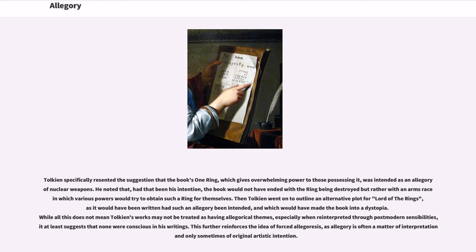Tolkien specifically resented the suggestion that the book's One Ring, which gives overwhelming power to those possessing it, was intended as an allegory of nuclear weapons. He noted that, had that been his intention, the book would not have ended with the ring being destroyed, but rather with an arms race in which various powers would try to obtain such a ring for themselves. Tolkien went on to outline an alternative plot for The Lord of the Rings as it would have been written had such an allegory been intended, which would have made the book into a dystopia. While this does not mean Tolkien's works may not be treated as having allegorical themes, especially when reinterpreted through postmodern sensibilities, it at least suggests that none were conscious in his writings. This further reinforces the idea of forced allegorism, as allegory is often a matter of interpretation and only sometimes of original artistic intention.